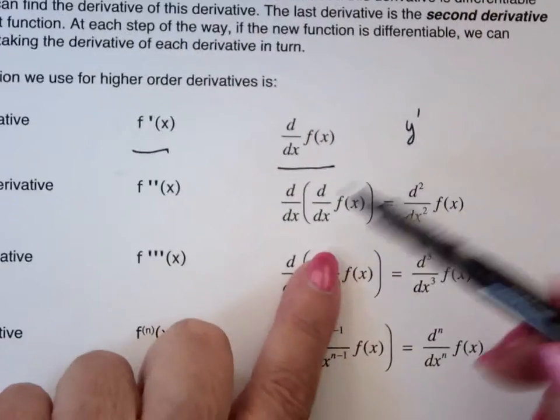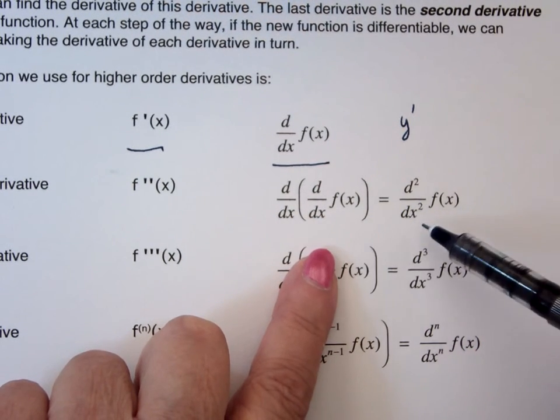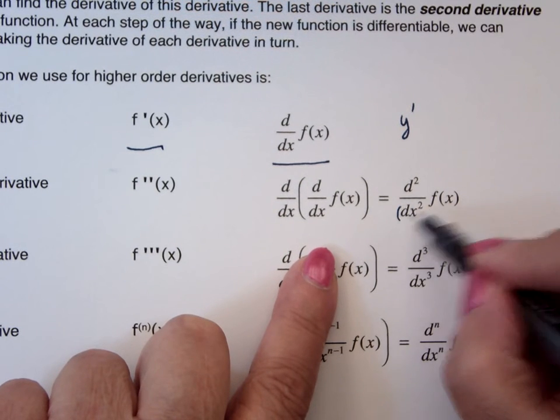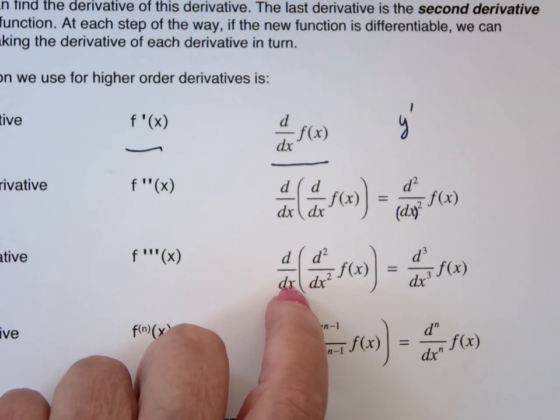And if you notice, d times d is d squared, dx times dx is dx squared. It's like saying this without the parentheses. But that says second derivative.